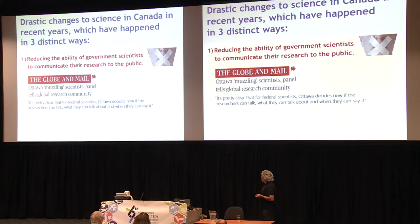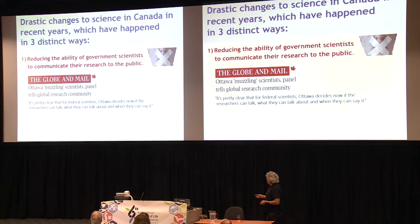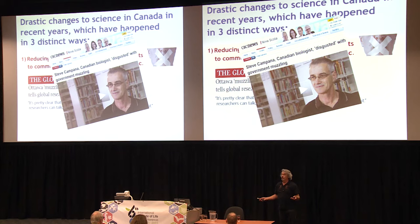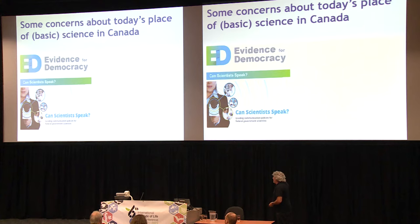As shown in this quote from the Globe and Mail, it's pretty clear that for federal scientists, Ottawa decides now if the researchers can talk, what they can talk about, and when they can say it. The most recent example is Steve Campana, a well-known marine biologist in Canada, who expressed his disgust about government muscling and basically decided to resign and move to Iceland. Scientists have put together the organization Evidence for Democracy to have a voice and express how concerned we are.